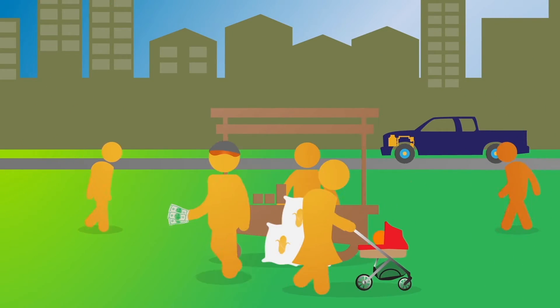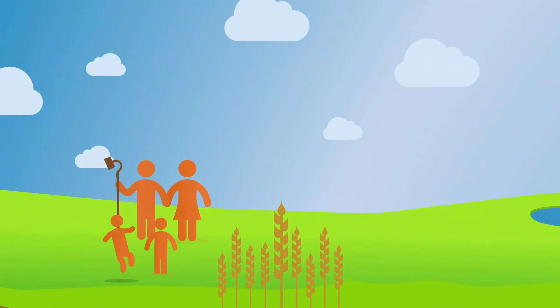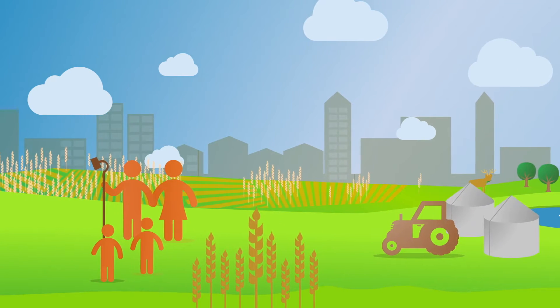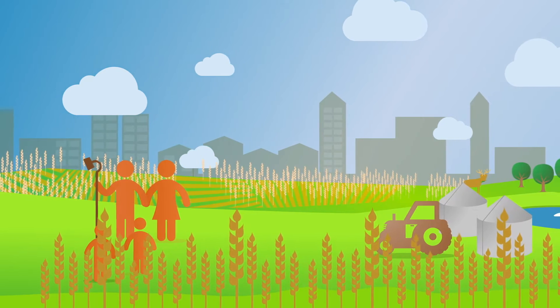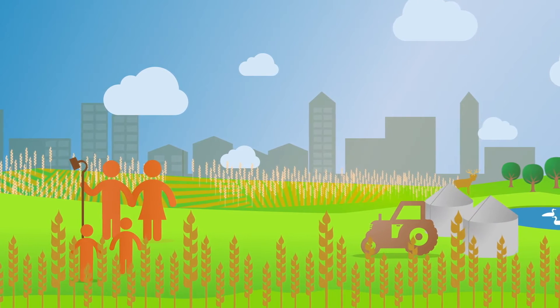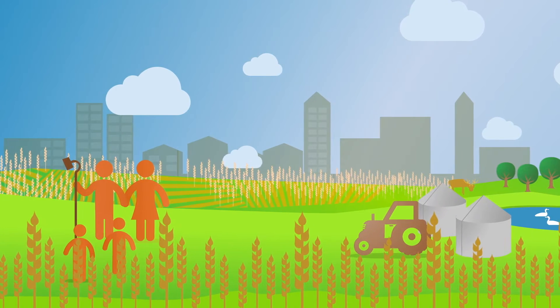With the money the farmer has made from selling their crop, they can reinvest in their farm. Improving efficiency by adopting new technologies or best management practices can lead to increased food production, providing the farmer with additional income while also protecting the environment.